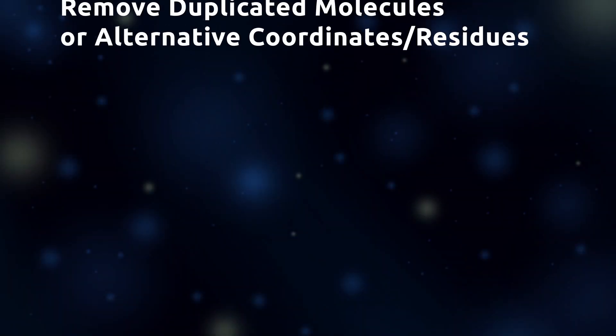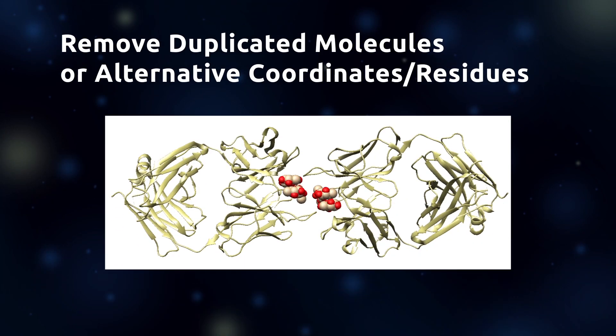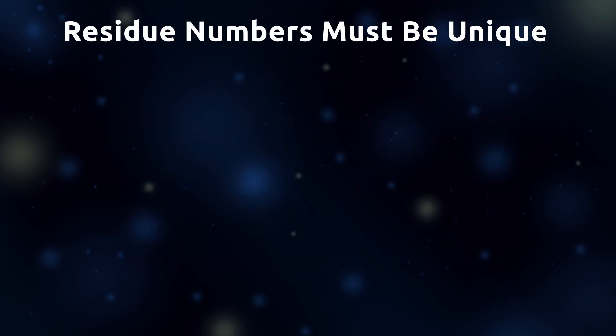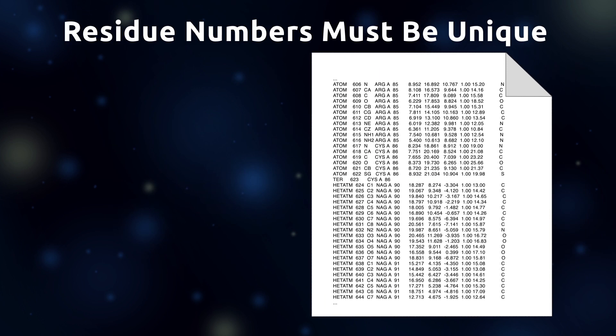It's common to find duplications of various sorts in crystal structures. All duplicates must be removed. Though it may change in the future, it is currently a requirement that each residue must be assigned a unique number.